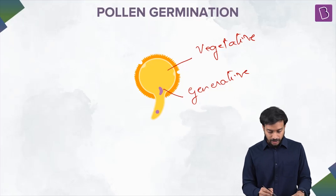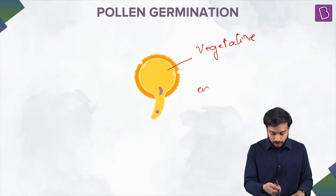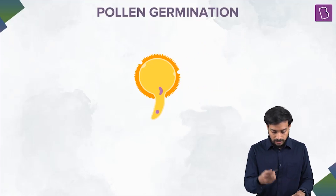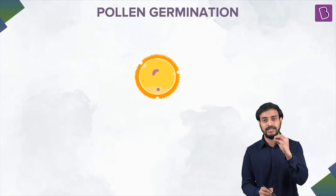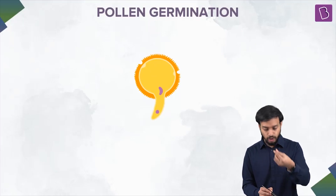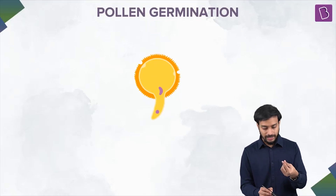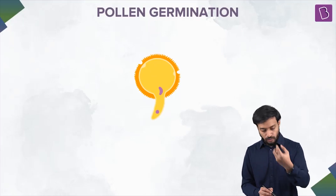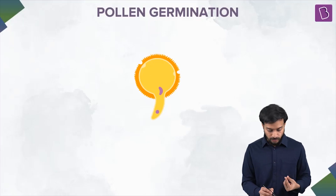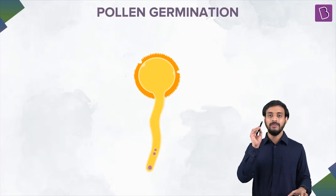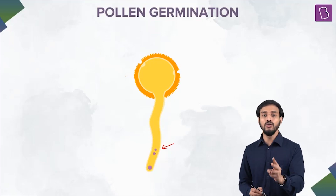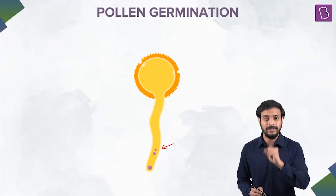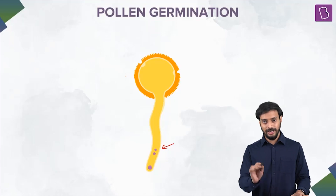A pollen tube starts forming after the pollen grains are deposited on the stigma of the flower. The nuclei start moving inside the tube. Very importantly, the generative cell divides to form two male gametes.